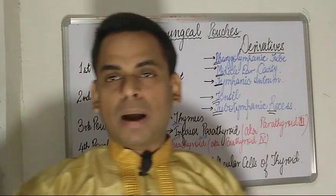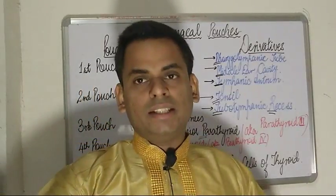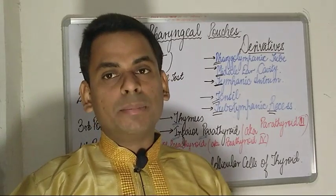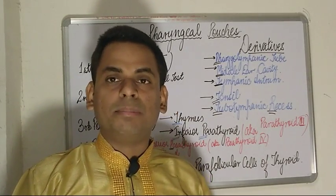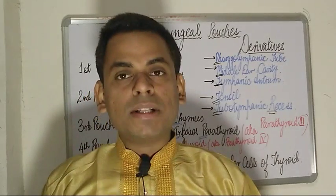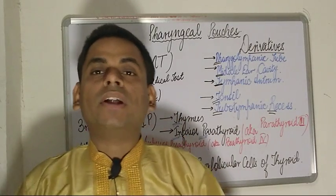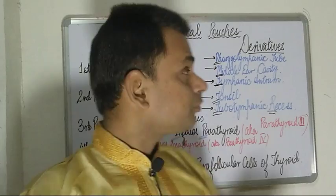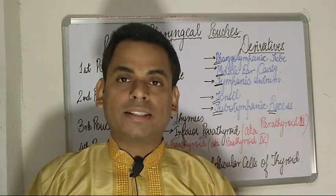Looking at pharyngeal pouches: in embryonic development, the pharyngeal pouches form on the endodermal side between the pharyngeal arches. In this video, I'll be focusing on tricks and mnemonics to easily remember the different types of pharyngeal pouches and the derivatives from each pouch, in the form of simple mnemonics.